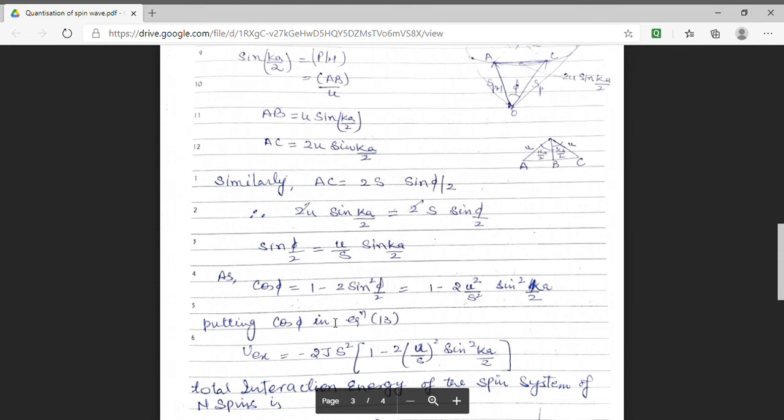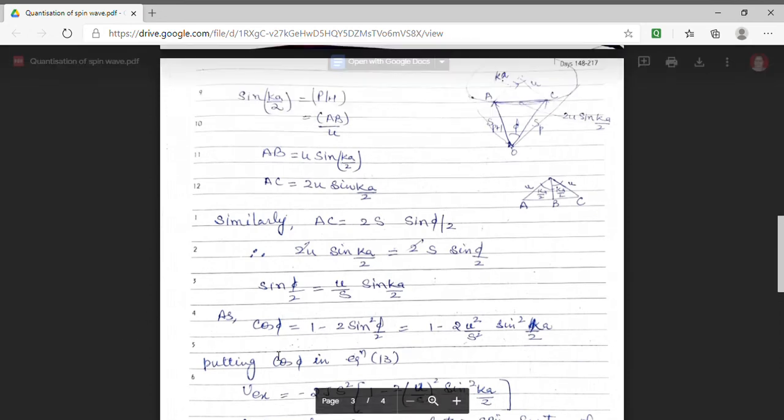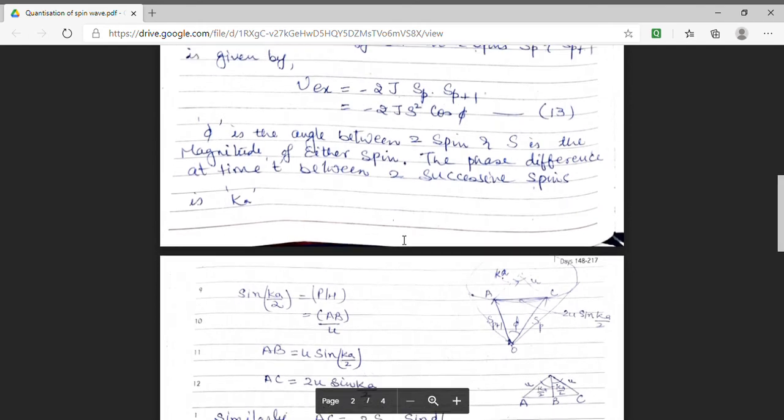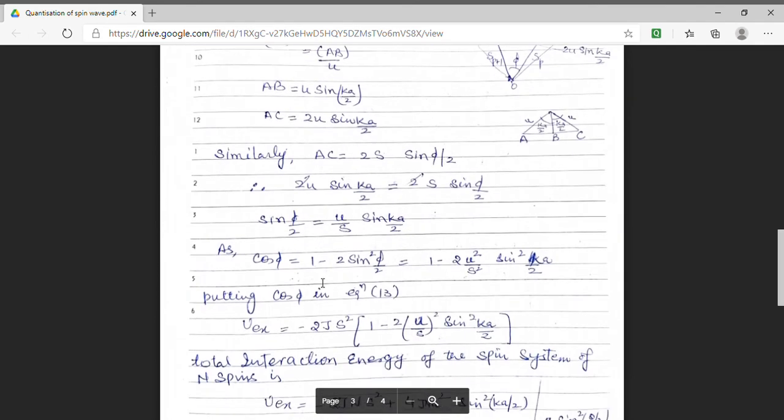So cos phi which is equal to 1 minus 2 sin phi by 2, it comes out to be 1 minus 2u square by s square sin square Ka by 2. My exchange energy can be obtained by putting the value of cos phi. This exchange energy is minus 2u square by s square sin square Ka by 2.